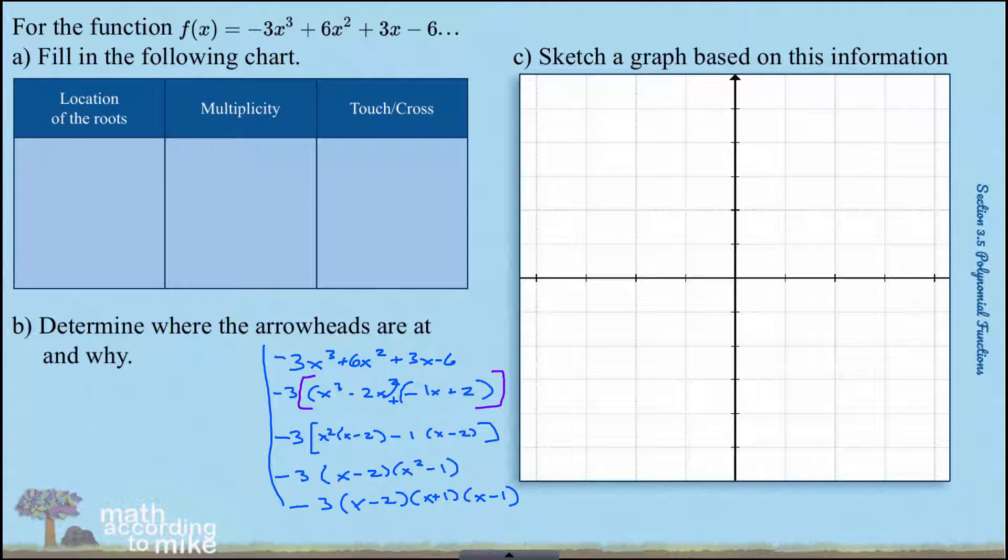So looking at that factored form of the function, what numbers would cause that function to equal 0? 2, negative 1, positive 1.